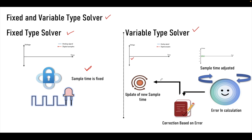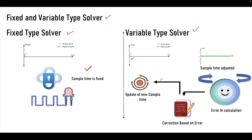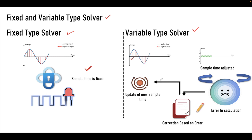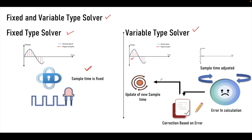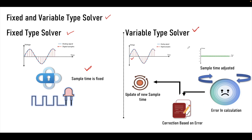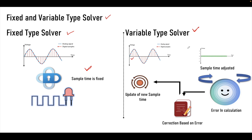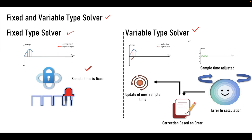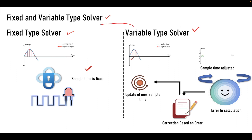Through variable type solver you can try to figure out what is the proper sample time the system should have, so that you can solve it or collect the data properly. This is all about the variable type solver — when you select it, the main intention is to analyze the model, and based on that you will be able to also judge the system. Once it is all done, you can set a fixed type solver for the same model.